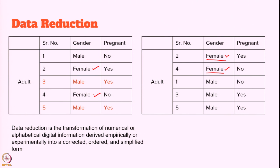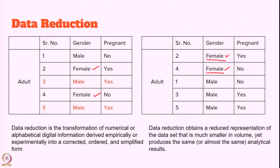Data reduction is the transformation of numerical or alphabetical digital information derived empirically or experimentally into a corrected, ordered, and simplified form. Data reduction obtains a reduced representation of a dataset that is much smaller in volume, yet produces the same or almost the same analytical results. Dimensionality reduction converts n-dimensional data into fewer dimensions — maybe one or two — and then we extract information from the method.